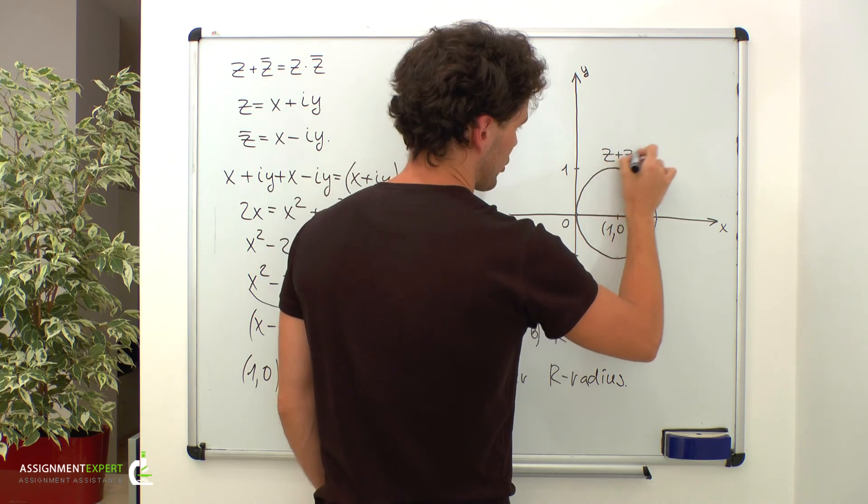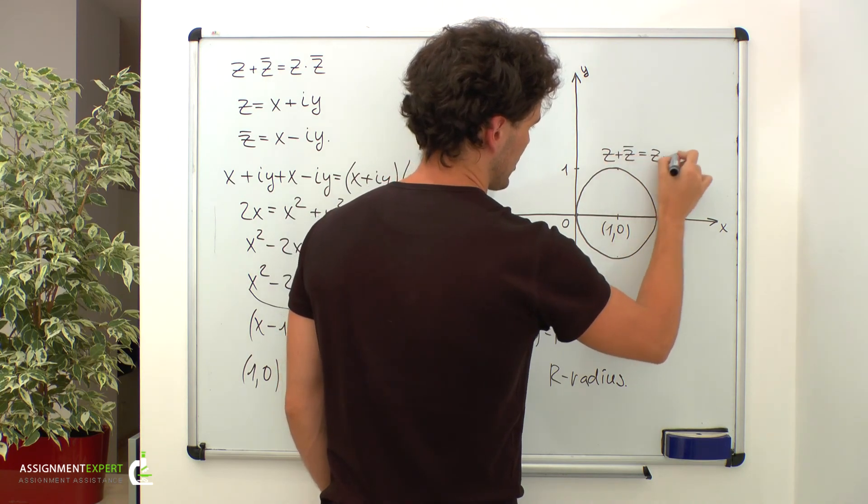z plus its complex conjugate equals z times its complex conjugate.